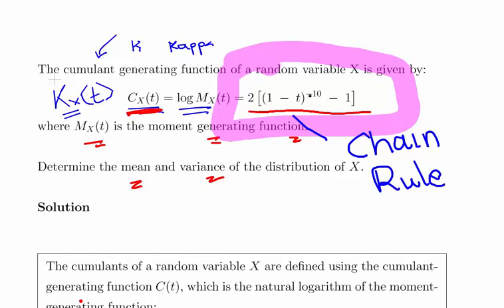The derivative of (1 minus t) is minus 1. And then the derivative of (1 minus t) to the minus 10, just treating it as a variable, is minus 10 times (1 minus t) to the minus 11. And then the minus 1 and the minus 10 cancel out, so we get 10. And then we multiply that by 2, we get 20.